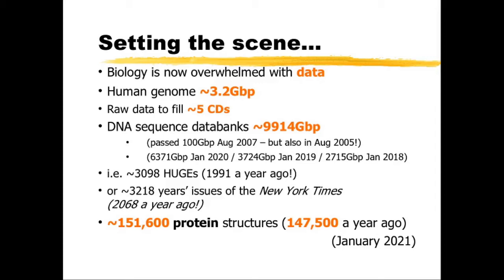The DNA sequence data banks are now around about 9,900 gigabase pairs in size. You can see how much that has increased over the last 15 years or so. It was originally stated in August 2005 that the data had passed 100 gigabase pairs, but that figure was restated in August 2007 because they changed the way the counting was done — there was some redundancy in the original count. Comparing 9,900 gigabase pairs with numbers from a year ago: 6,300; two years ago: 3,700; and three years ago it was 2,700 — so you can see how it's been going up hugely.